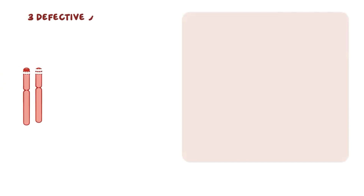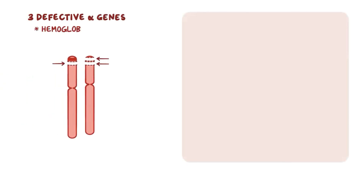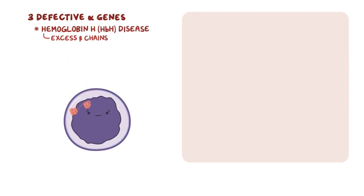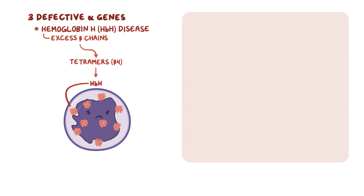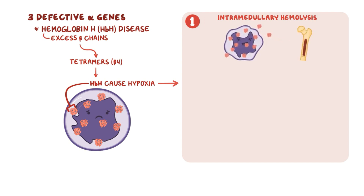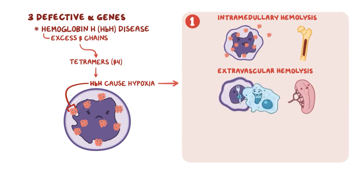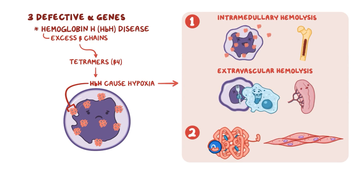If there are three defective alpha genes, there's moderate disease called hemoglobin H, or HbH disease. This is caused by excess beta chains, which clump together within developing red blood cells to form tetramers, or beta-4, and give rise to a form of hemoglobin called hemoglobin H. HbH molecules cause hypoxia in two ways. First, they damage the red blood cell membrane, resulting in intramedullary hemolysis, or red blood cell breakdown in the bone marrow, or extravascular hemolysis, when red blood cells are destroyed by macrophages in the spleen. Second, HbH has a very high affinity for oxygen and doesn't release oxygen to the tissues.